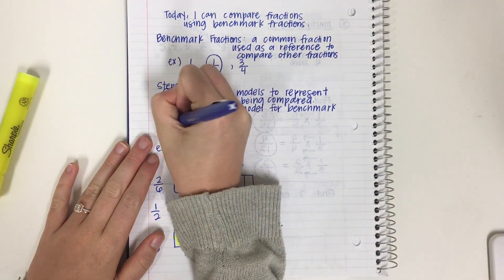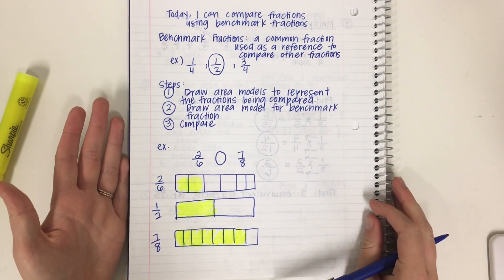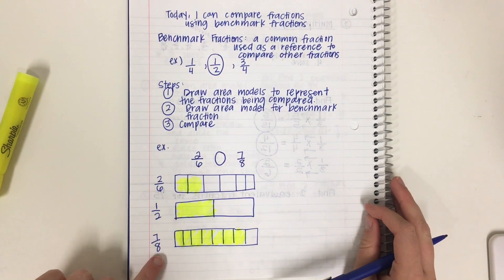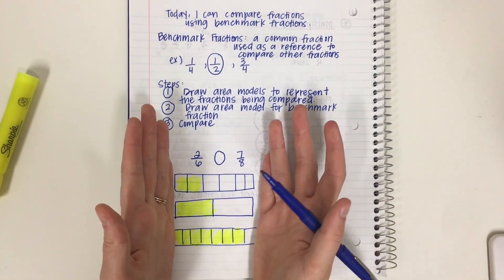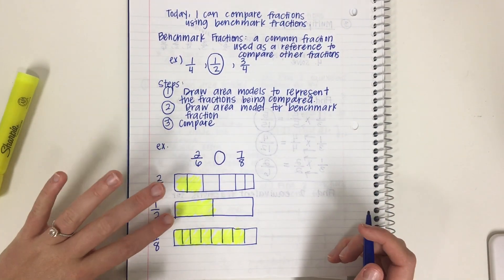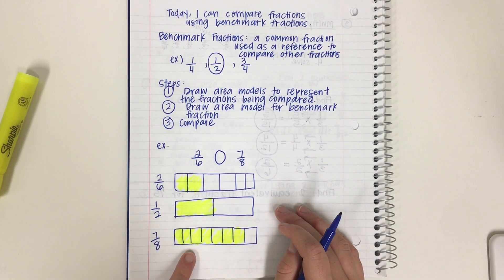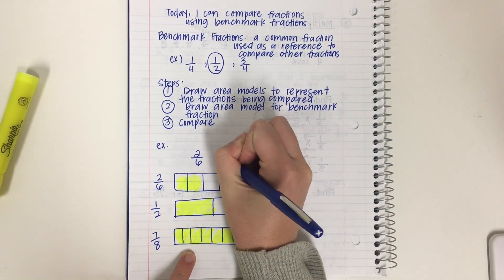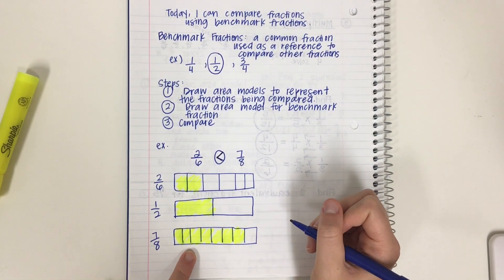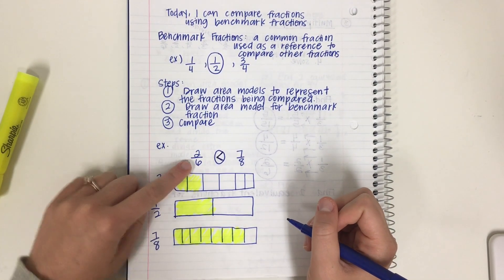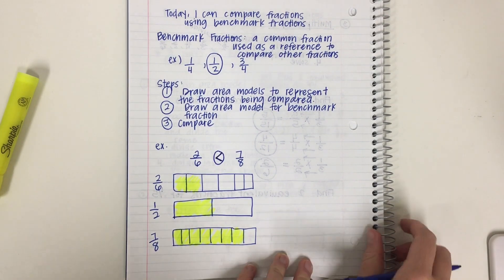Step three is to compare. Look how easy it is! Seven-eighths takes up way more space than two-sixths. If you draw your area models the same size, you have your benchmark fraction in the middle to show you which one's greater and which one's less. Since seven-eighths is greater, I draw my alligator mouth tackling the bigger number. So this problem reads: two-sixths is less than seven-eighths.